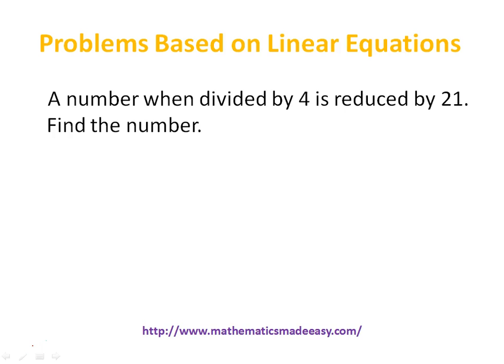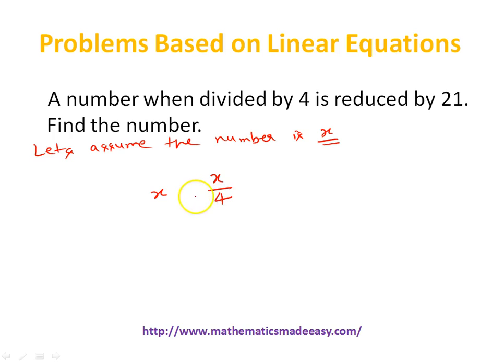Moving to the next question: A number when divided by 4 is reduced by 21 — find the number. Let's assume the number is x. So x divided by 4 represents the number reduced from itself — that is, x minus x/4 equals 21. This is your linear equation in x.